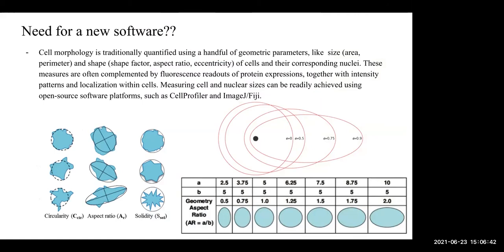So what's the need for this new software? It's because cell morphology is being quantified based on geometric measures like area, perimeter, and shape factors like aspect ratio, eccentricity, etc. which can all be quickly and easily calculated from softwares like CellProfiler, ImageJ, MATLAB, etc. But these measures don't fully capture the shape information.